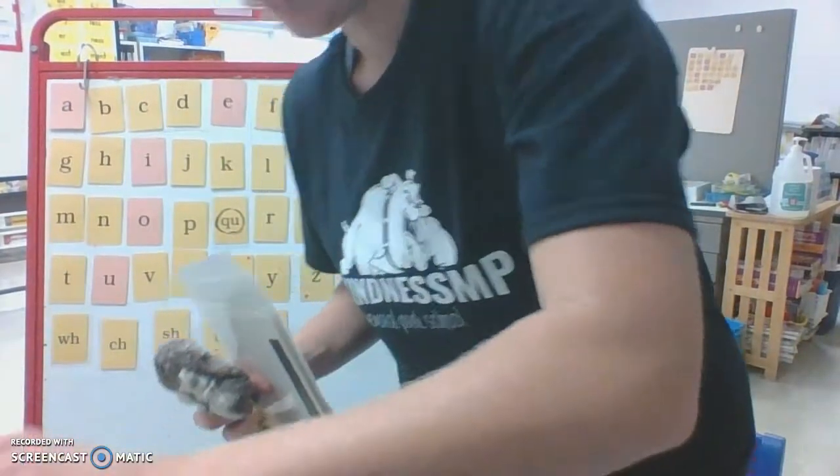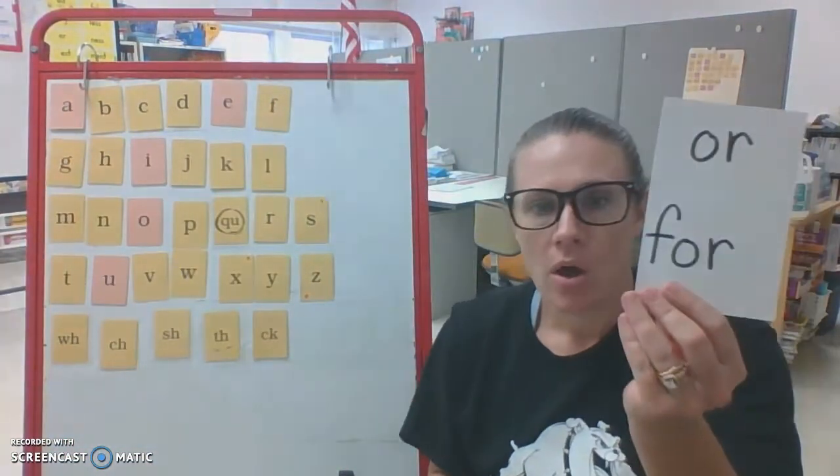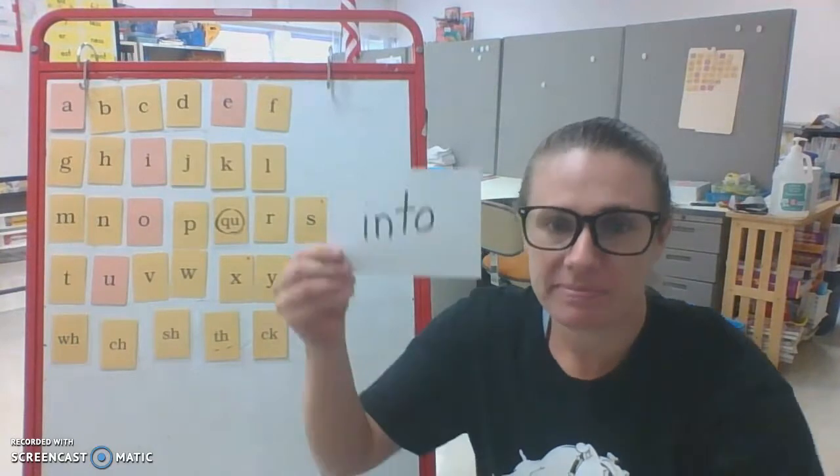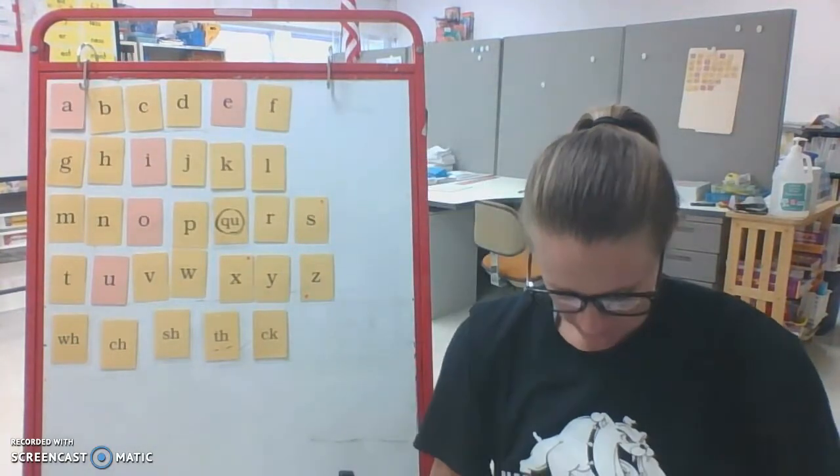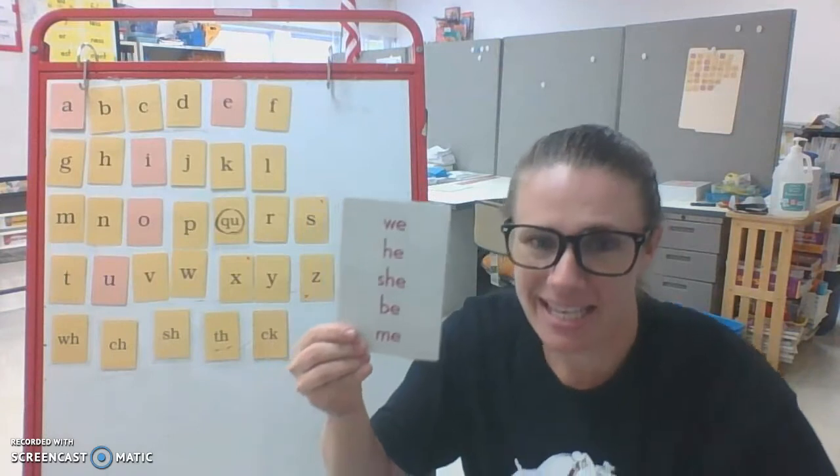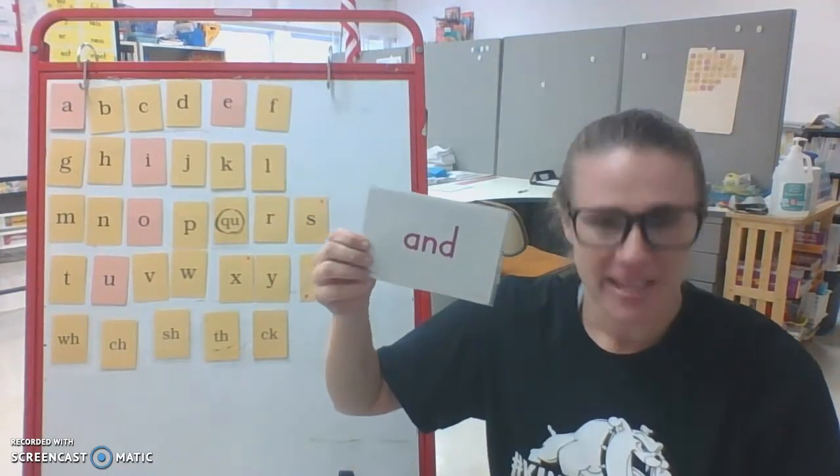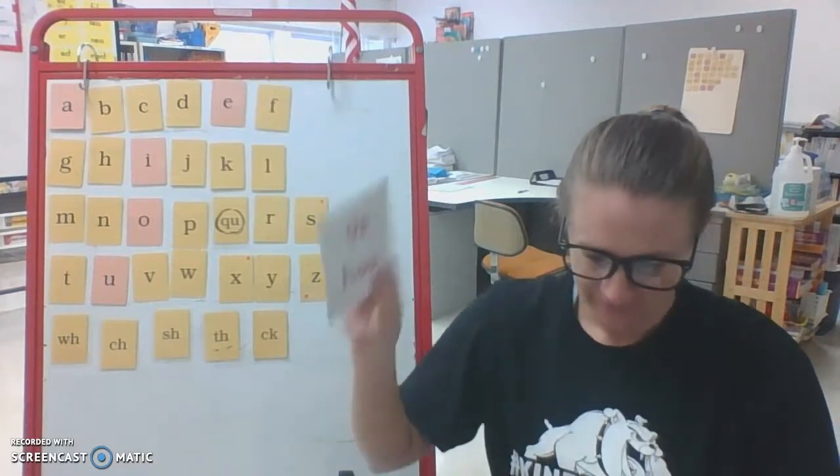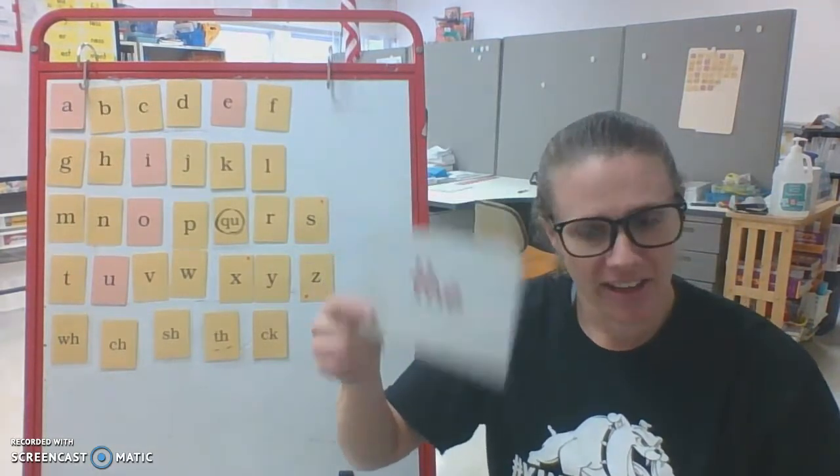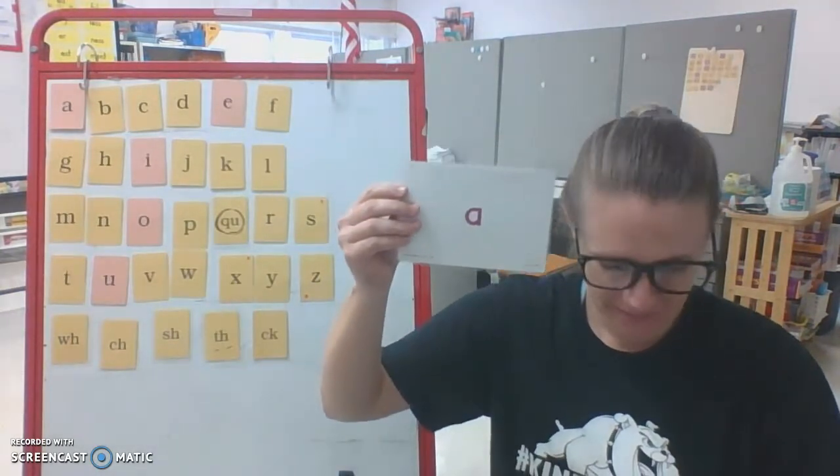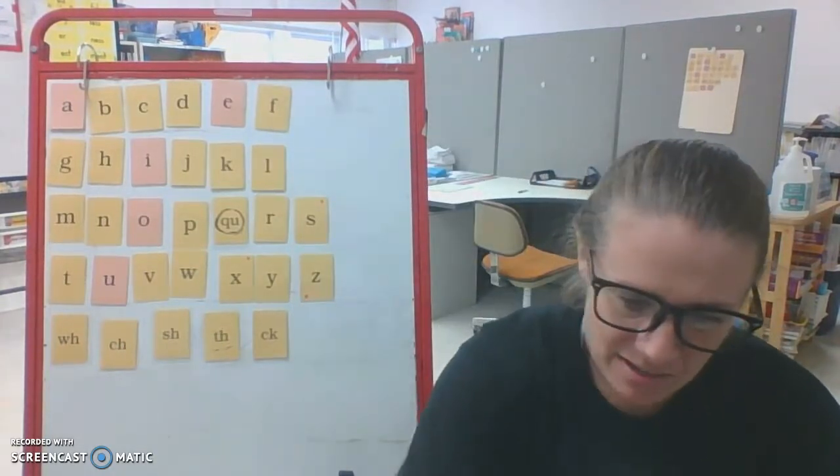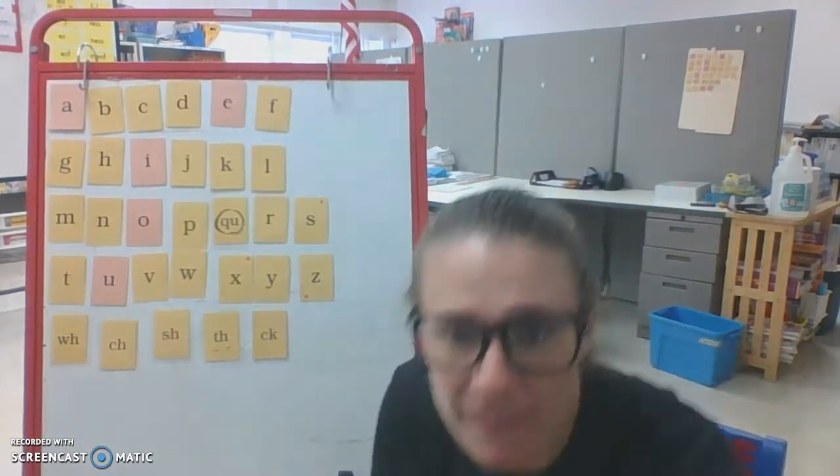And let's add in the trick words we've done so far. Try to beat me. Or, for, to, into, we, he, she, be, me. And, as, has, has, the, ah. Of. Very nice job. Especially if you beat me some of those times. You're a fast reader out there.